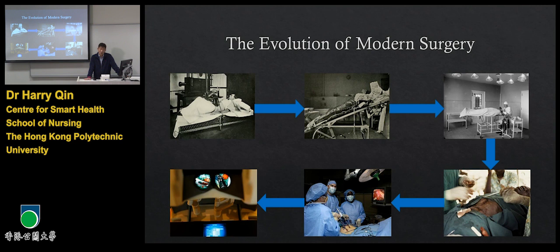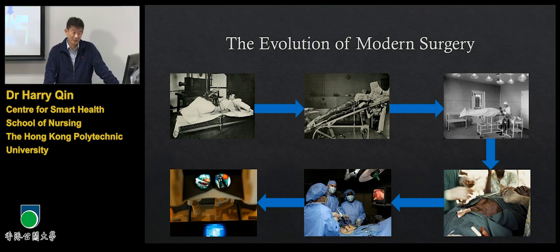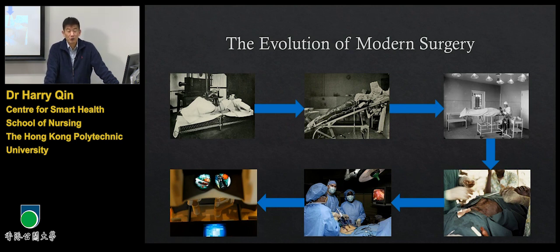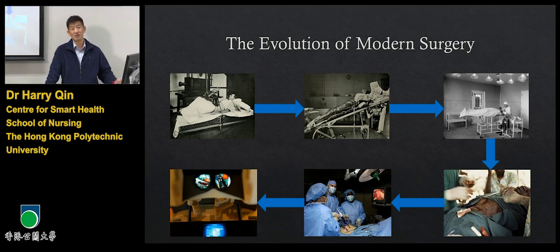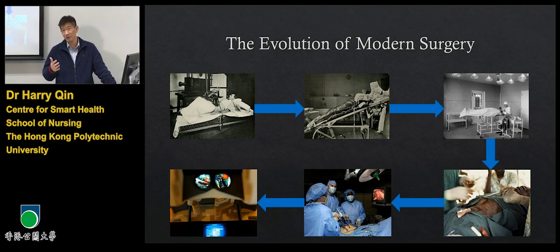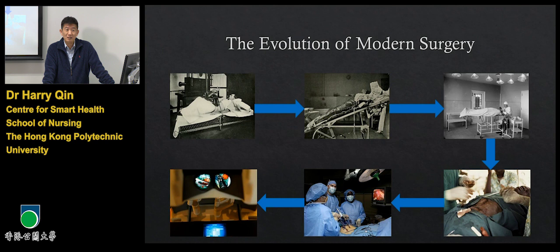So what is computer assisted surgery? In the past 100 years, surgery has become more and more reliable, precise and safer. The term of precision surgery aims to develop using advanced technology, particularly information technology, to make the surgical procedures safer. We can look at these figures to check the evolution of modern surgery and see how surgical procedures have become more and more reliable, precise and safer in the past 100 years.